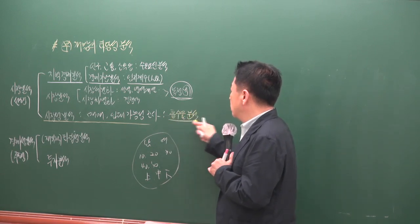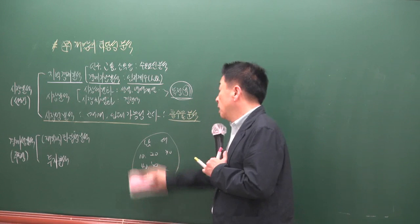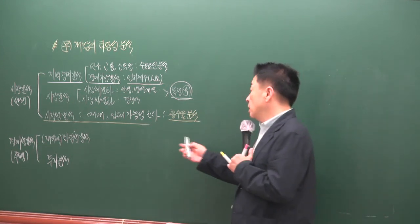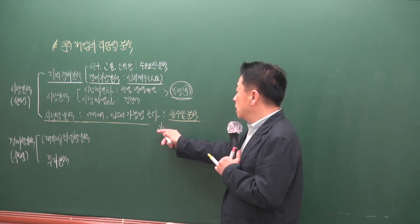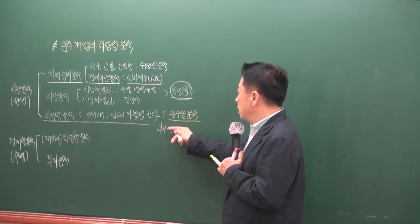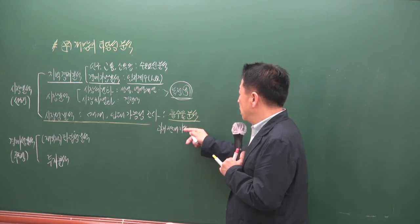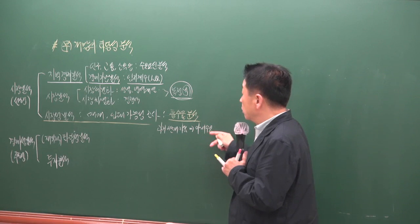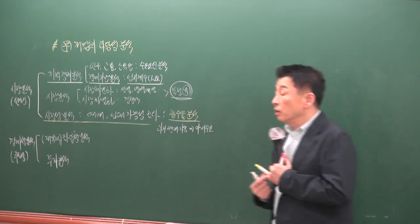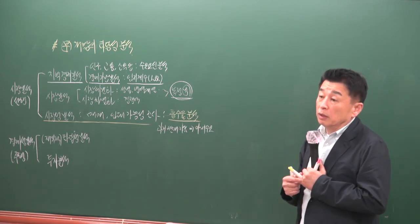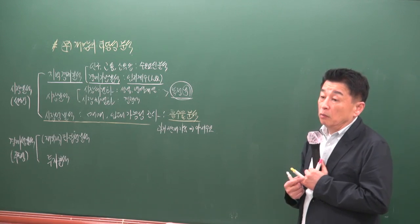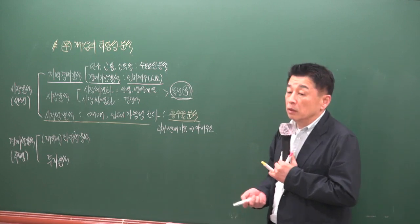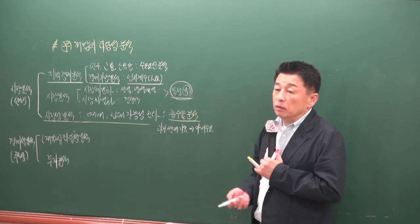흡수율 분석이란 미래 수요는 예측하기 어렵기 때문에, 과거와 현재의 자료를 토대로 미래 수요를 추정하는 것입니다. 이것은 정확한 것은 아니며 표본 추출 개념이기 때문에 한계가 있습니다. 예를 들어 7~8년 전을 돌아보면 분당과 일산에서 비슷한 규모의 중대형 주상복합이 공급됐습니다.